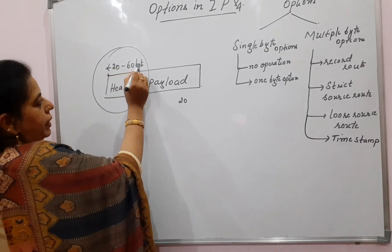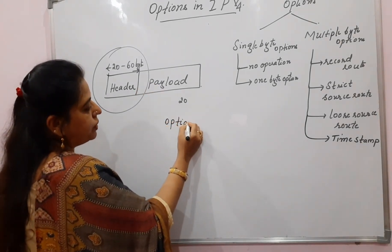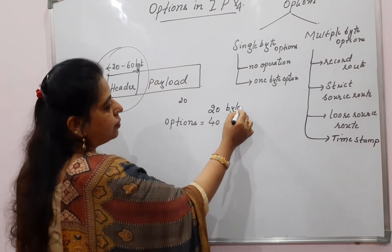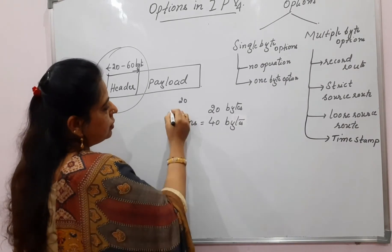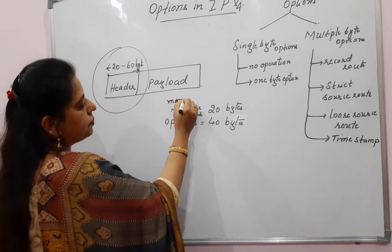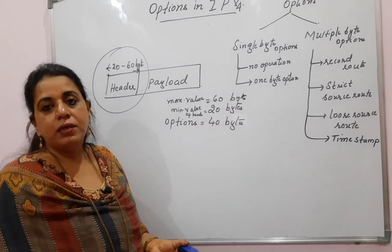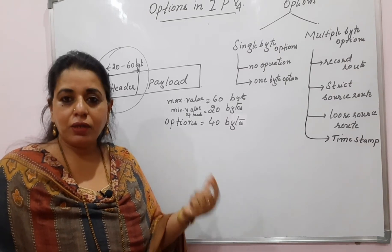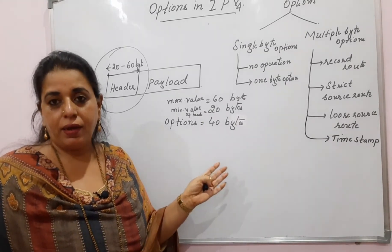If the header is minimum 20 bytes and maximum 60 bytes, then you can find out the size of the options. Options will be 40 bytes, because the 20 bytes mandatory header part is there and the minimum value of the header is 20 bytes, but the maximum is 60 bytes. So the remaining part is 40 bytes. Those bytes are under the heading called options. As the name itself indicates, it is optional — every IP datagram may not have options included. Let us see, if options are included in the IP header, what the different options are.